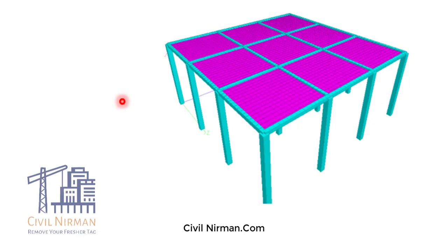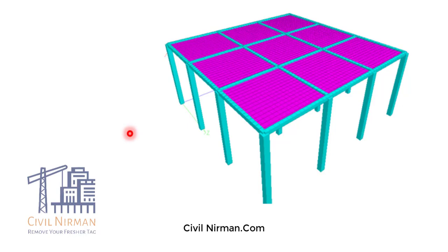Some students ask whether we can model the slab using only four-noded plates without specifying beams. The answer is no — you cannot model the slab as four-noded plates only, because this will not satisfy compatibility conditions. Load will be transferred at the four joints only, and since there is no node in the span of the beam, the beam is free to bend, which is not realistic. If you want to model using plate elements, it must be bounded by beams as shown.